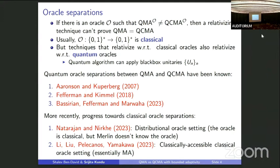By classically accessible, a quantum algorithm should normally be able to query the oracle in superposition, but in this result they placed a restriction that the classical oracle cannot be queried in superposition. In the setting of query complexity, this means this class is essentially MA, and their separation in query complexity was between QMA and MA in that case.